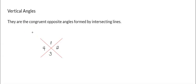Okay, now vertical angles. Simple definition is that they are congruent opposite angles formed by intersecting lines. So we have two intersecting lines that have intersected here, and I've numbered them one, two, three, and four.